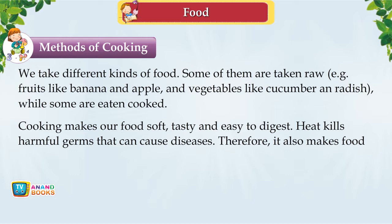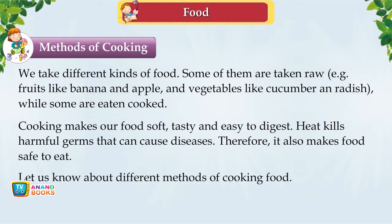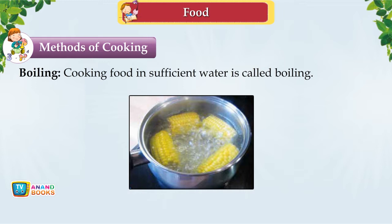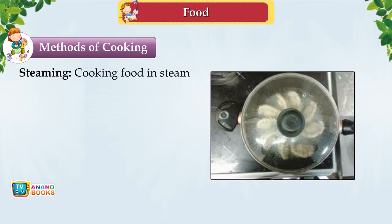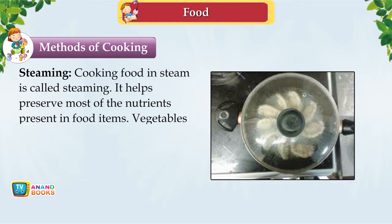Boiling — cooking food in sufficient water — is used for rice, pulses, eggs, potatoes and many other vegetables. Steaming — cooking food in steam — helps preserve most of the nutrients. Vegetables like spinach and peas, and dishes like idlis, momos and dhokla are cooked by steaming.